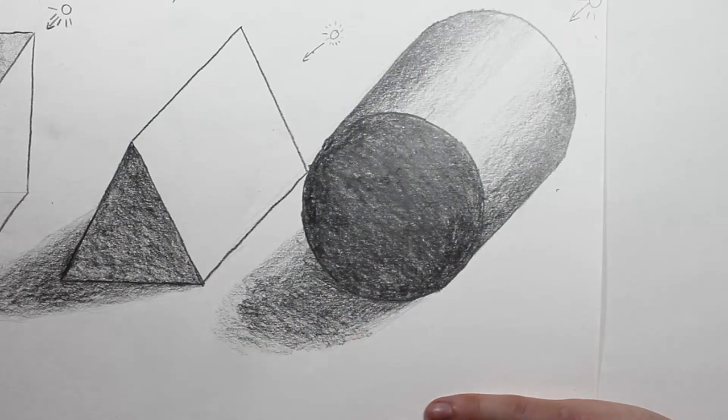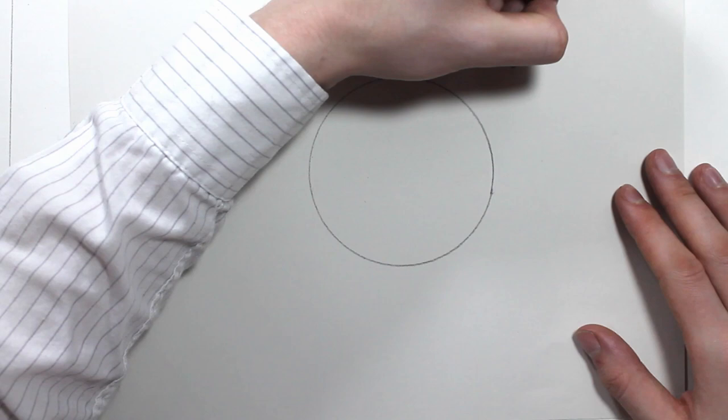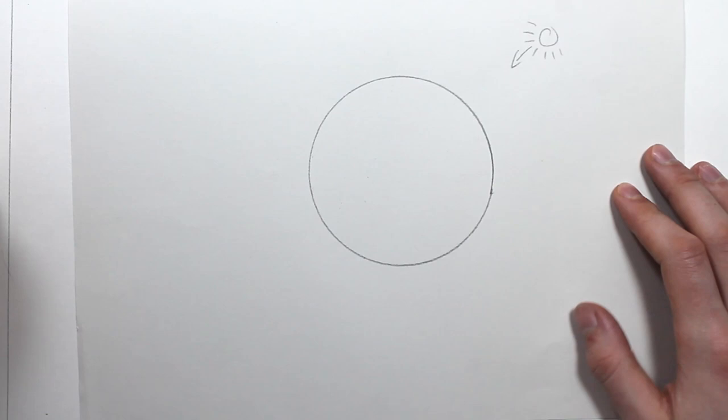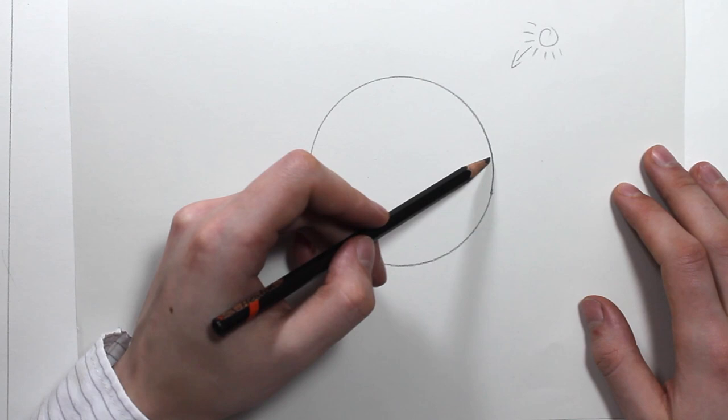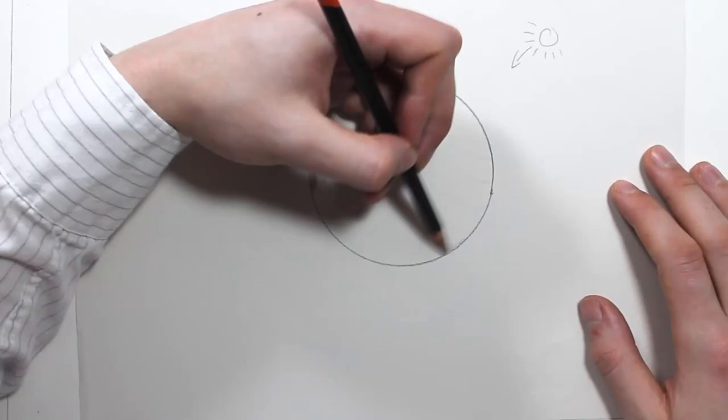We can also create the illusion of form without using perspective at all. As before, it's important to first select the light source so we know where that light is coming from. Then, by following the curve of the circle as we add tone, going from light to dark again, we can start to create a sphere.